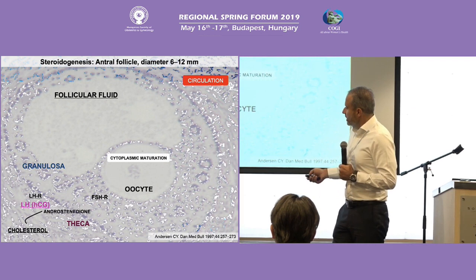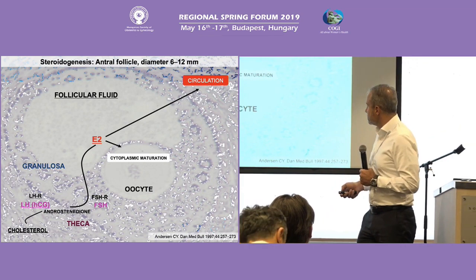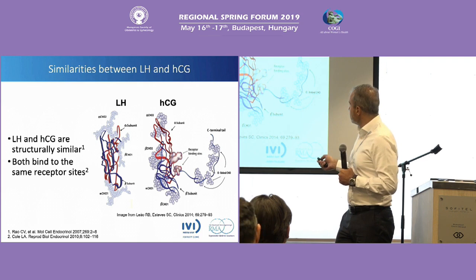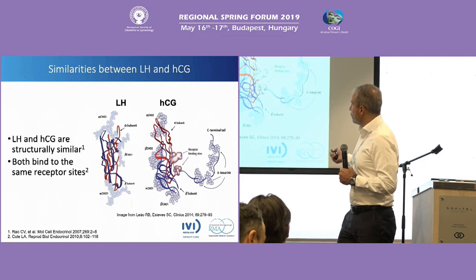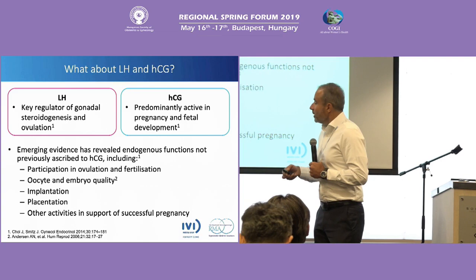What is happening intracellularly? You have cholesterol being converted through LH, then estradiol is produced. Some of this estradiol goes to the systemic circulation, and some remains within the oocyte. LH and hCG are very similar, but here — the carboxyterminal peptide — this gives the significant difference between LH and hCG.